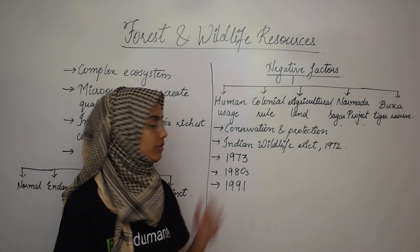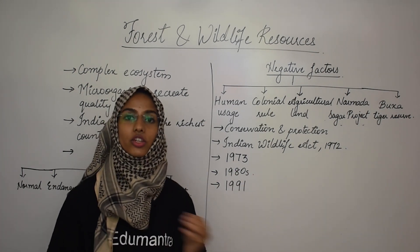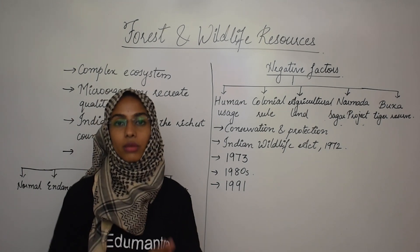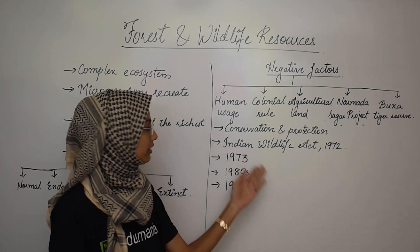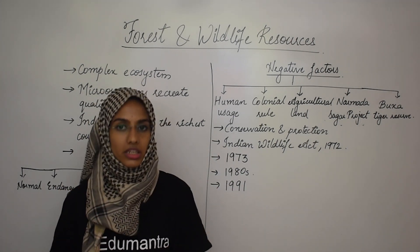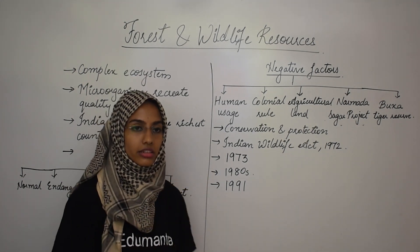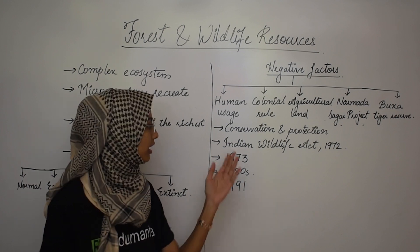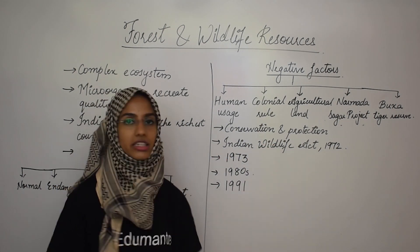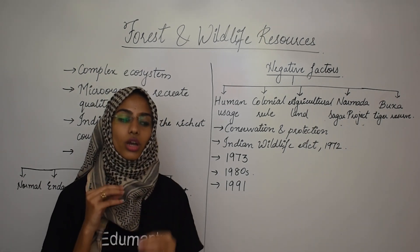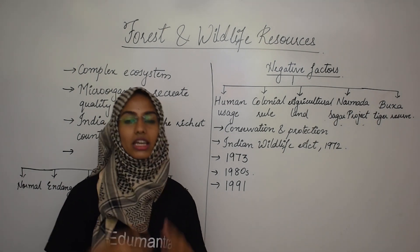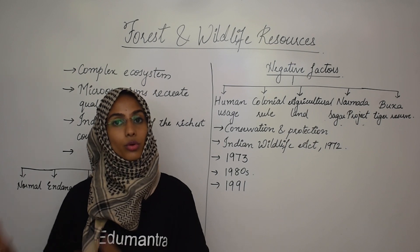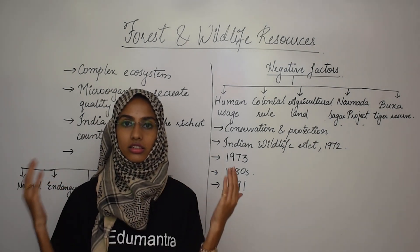Coming to the next topic, which is conservation and protection. The basic aim of conservation and protection is to make sure that whatever species are already extinct or endangered, they are preserved. During the 1960s and 1970s, conservationists pressurized for a National Wildlife Protection Program. On that basis, the Indian Wildlife Protection Act was enacted in 1972. The main aim of this act was to implement new laws to protect plants and animals from human activities. In 1973, the famous Tiger Project was launched, creating a program to preserve tigers across various locations.